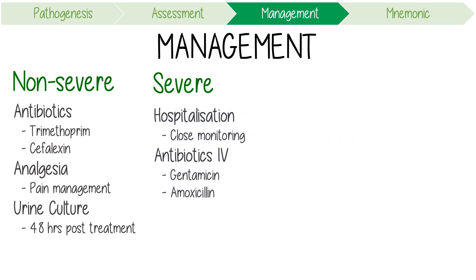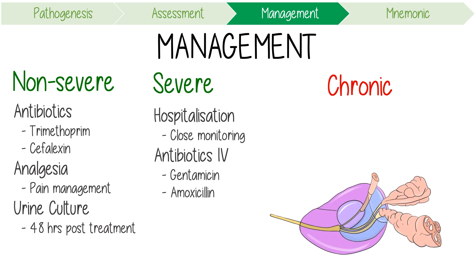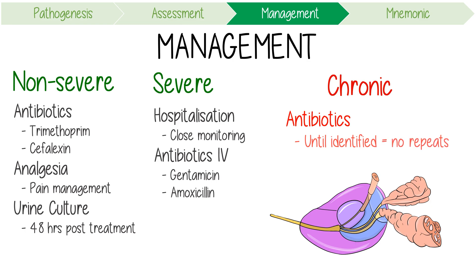For chronic bacterial prostatitis, antibiotics are also indicated, but until a pathogen is recognised, don't continually repeat courses. Empiric options might include quinolones like ciprofloxacin.